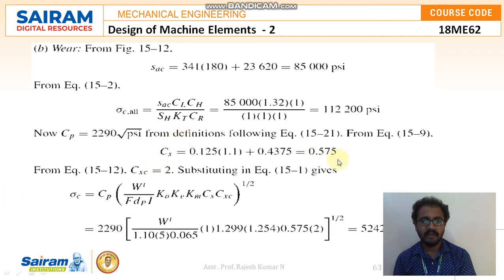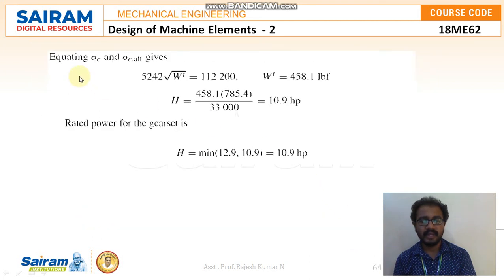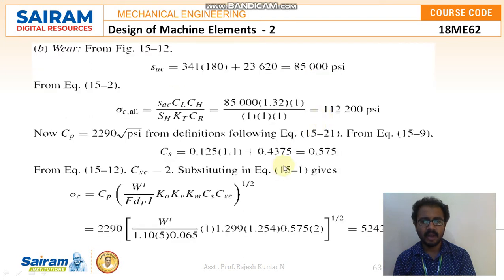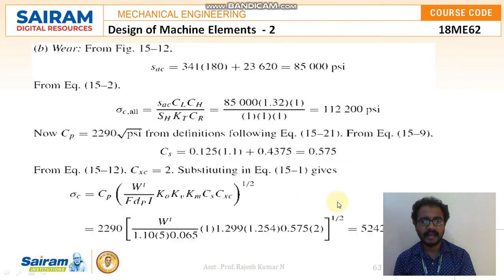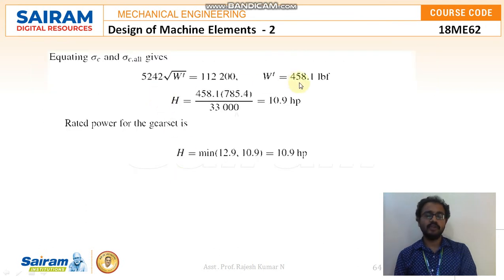Then now CP value that is 2290 square root of PSI where from definition we can write it down. So CS value I am getting as 0.575. Sigma C value I am getting as 5242 root of WT. So equating Sigma C and Sigma C allowable I will be getting the value as 5242 root of WT which is equal to 112200. So from this WT value I am getting 458.1. Previously what is the WT value we got? I got 552.6. But here based on this condition, that is the wear condition, I am getting the WT value as 458.1. And H value is 458.1 into 785.4 divided by 33,000. So H value I am getting as 10.9 HP.